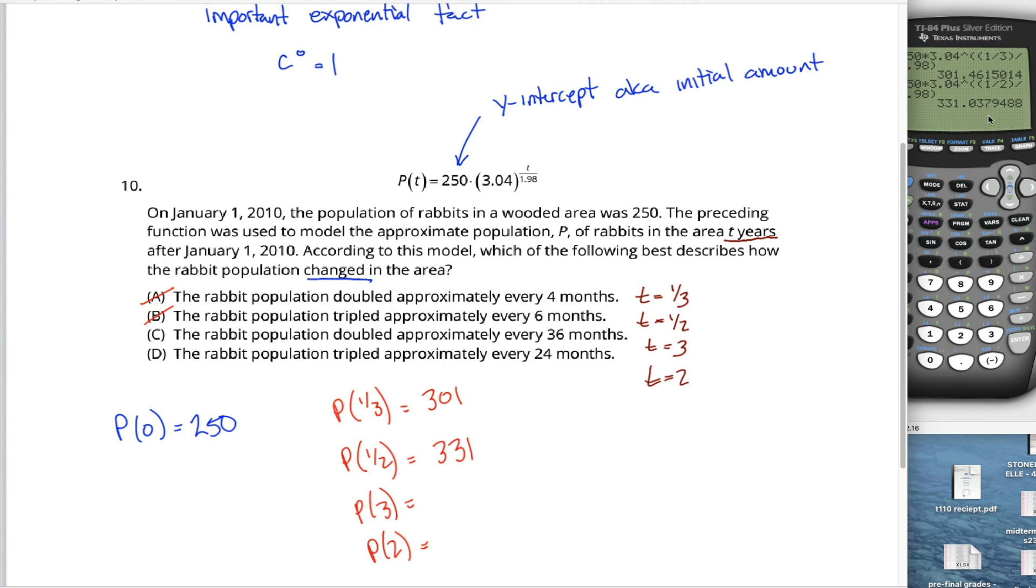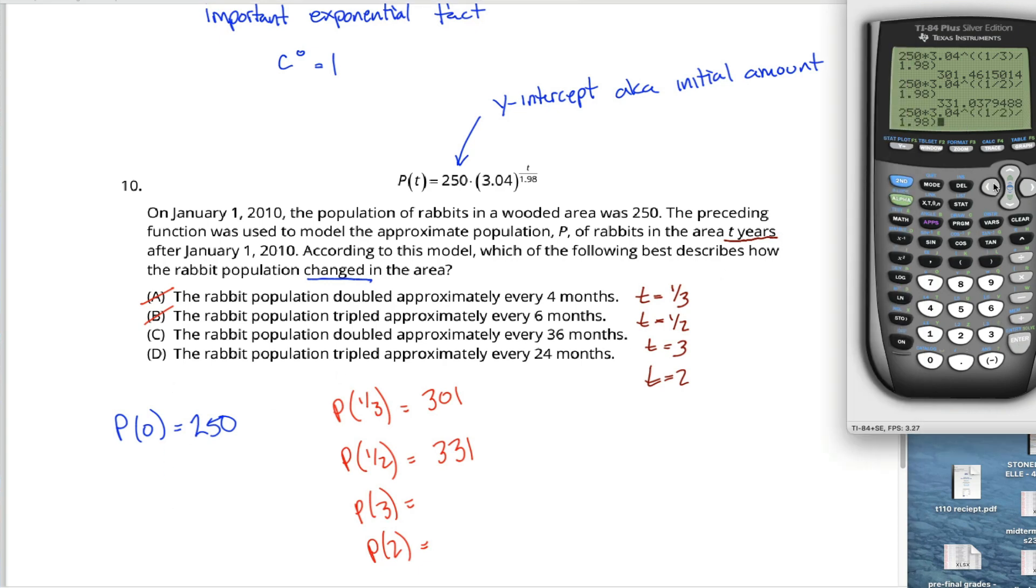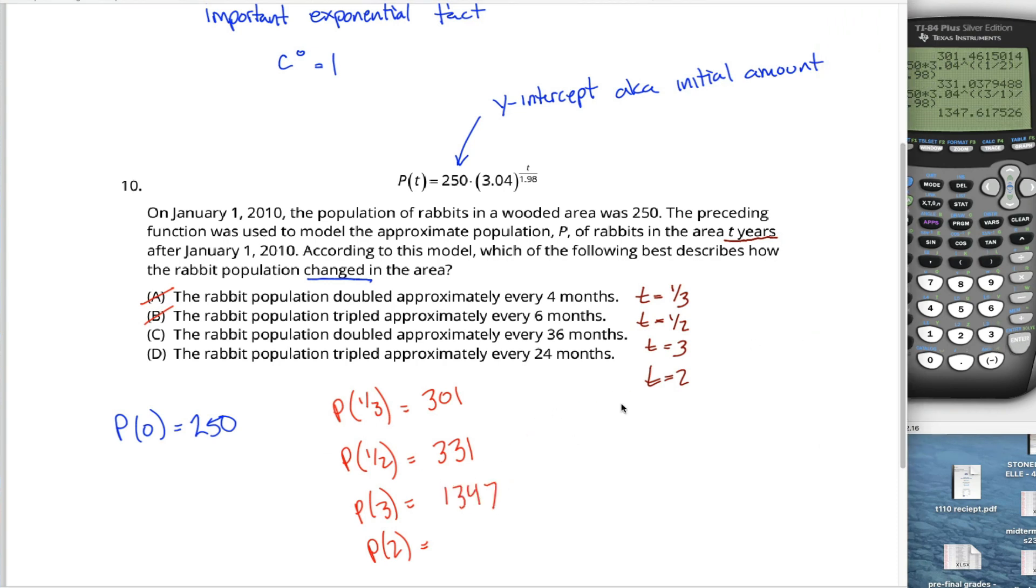You can do the same thing with 3 and with 2. Second entry, change one-half into 3. I'm going to write it as 3 over 1, so I don't have to delete any spaces or anything. Hit enter, it spits out 1347. Is that double 250? Nope.